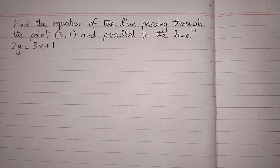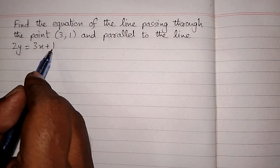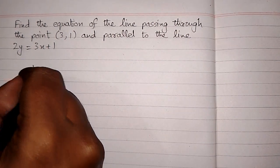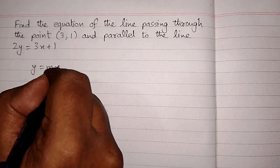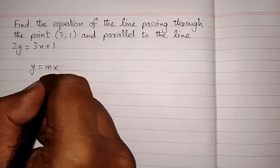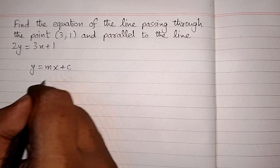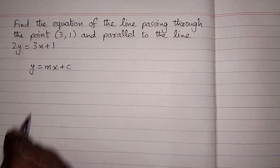In this video we will find the equation of the line passing through the point (3, 1) and parallel to the line 2y = 3x + 1. We know that the standard equation of a straight line is y = mx + c, where m is the gradient and c is the y-intercept.